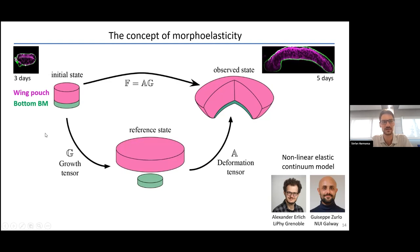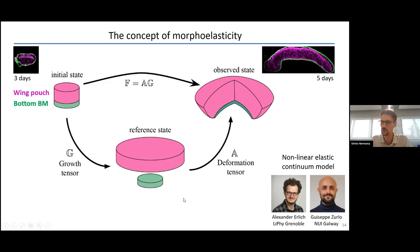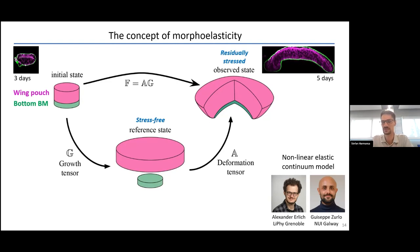Conceptually: if you separate the basement membrane and the wing pouch and let them grow individually, the tissue grows more and you end up with two discs of different sizes — they are no longer compatible, giving a geometric incompatibility. To merge them into a coherent object you need to stretch the bottom ECM, glue it, and let it relax, which results in deformation at the cost of residual stress.